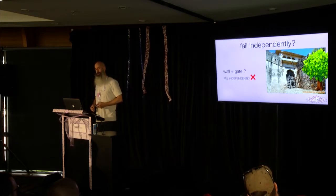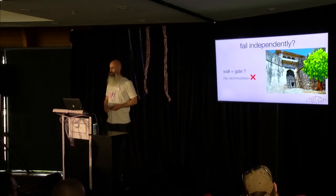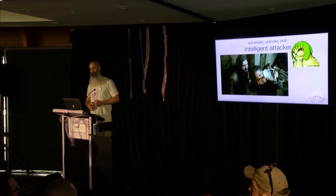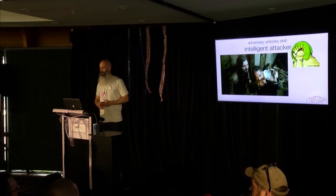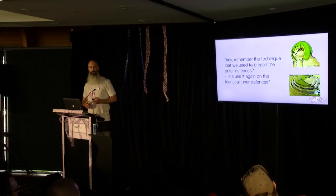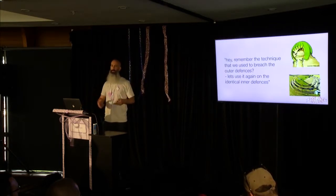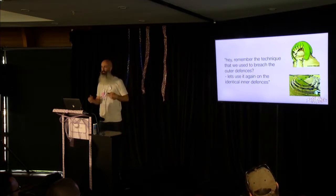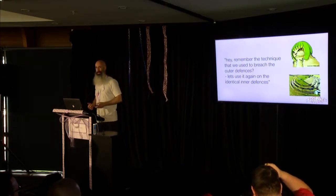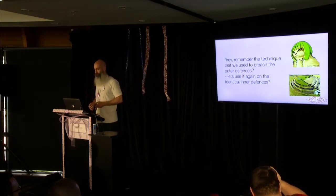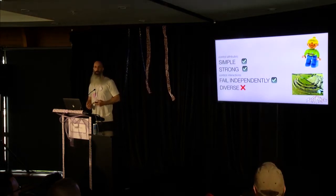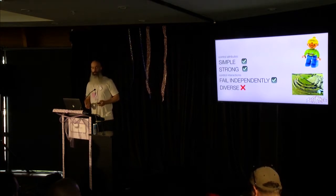Our adversaries keep getting better, and they have a look at our multiple-wall structure. They think: how can we defeat this? It turns out it's not a great design, because whatever they used to defeat the first wall — if it's ladders, use the ladder again; if they smashed a hole with axes, do that again. This is not necessarily difficult to defeat. Where this fails is in diversity — these controls are not diverse, which is a weakness for multiple controls.